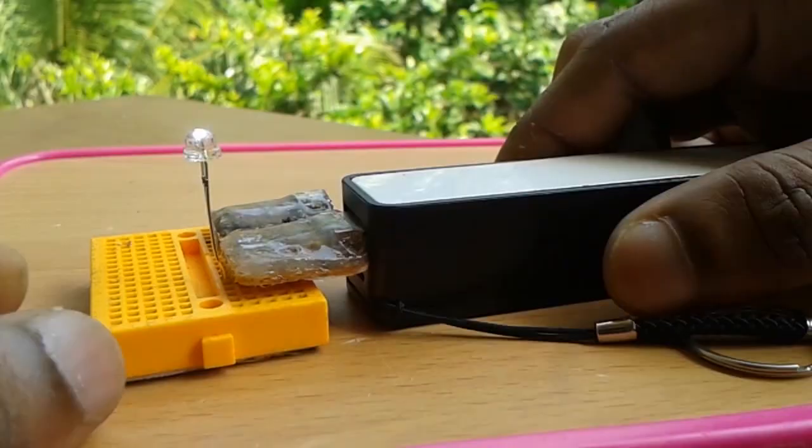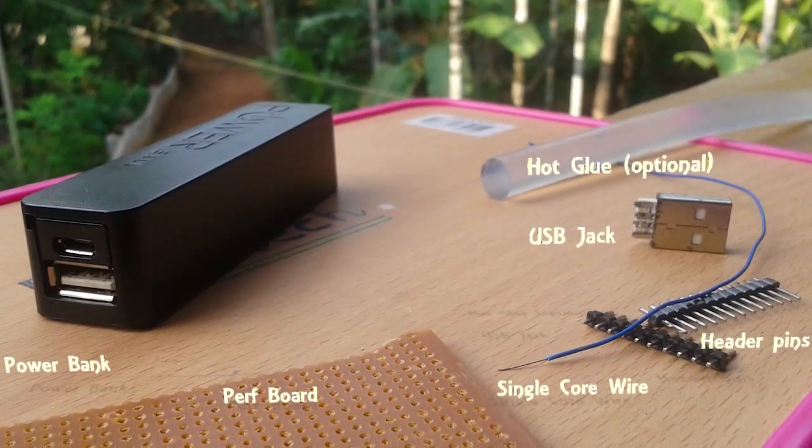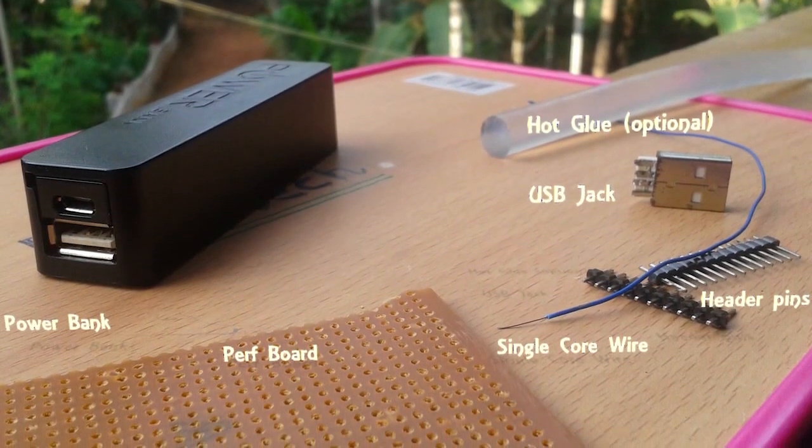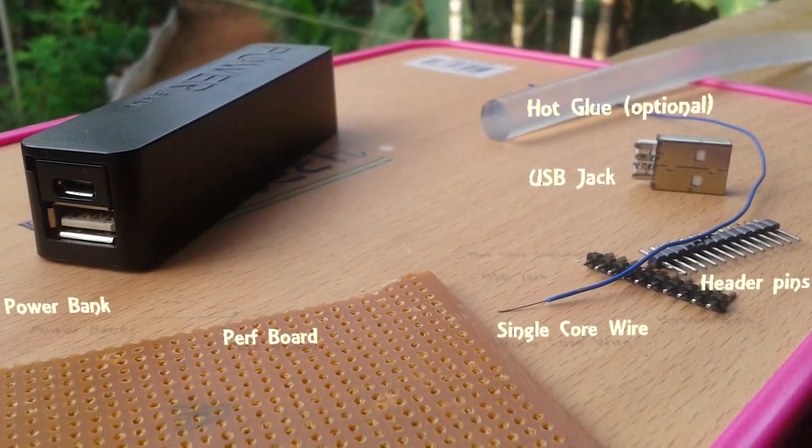So this gave me an idea to create a portable power supply for breadboard. For this project you will need a male USB jack, a perf board, thin single core wire, headers, and a cheap power bank like this, which I'll link in the description below.